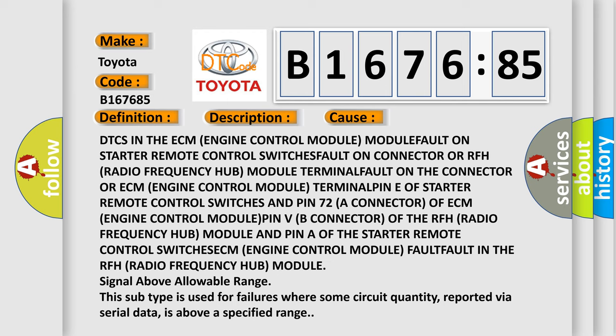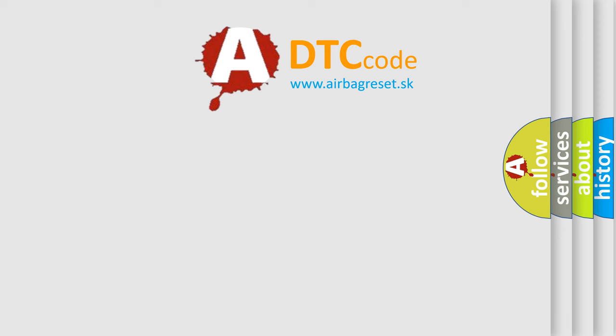In the RFH (Radio Frequency Hub) module, signal above allowable range. This subtype is used for failures where some circuit quantity, reported via serial data, is above a specified range.